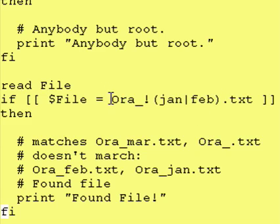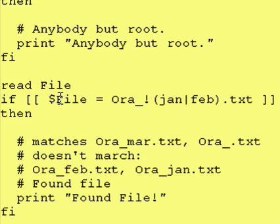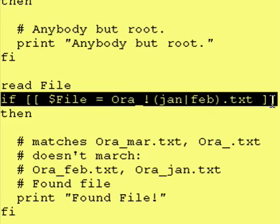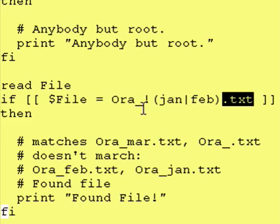And what that breaks down to is ora underscore asterisk dot txt minus ora underscore feb dot txt and also minus ora underscore jan dot txt. So this test comes out true if what is inside a file starts with ora underscore, ends in dot txt, and as long as the letters after the underscore aren't j-a-n or f-e-b, then the test comes out true.